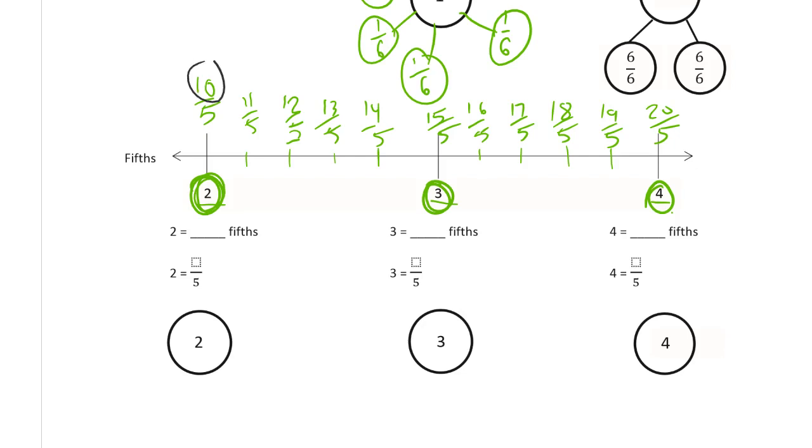And you'll notice that when they match up with whole numbers, look: 10, 15, 20, they're multiples of 5. So 2 wholes is 10 fifths, 3 wholes is 15 fifths, and 4 wholes is 20 fifths.